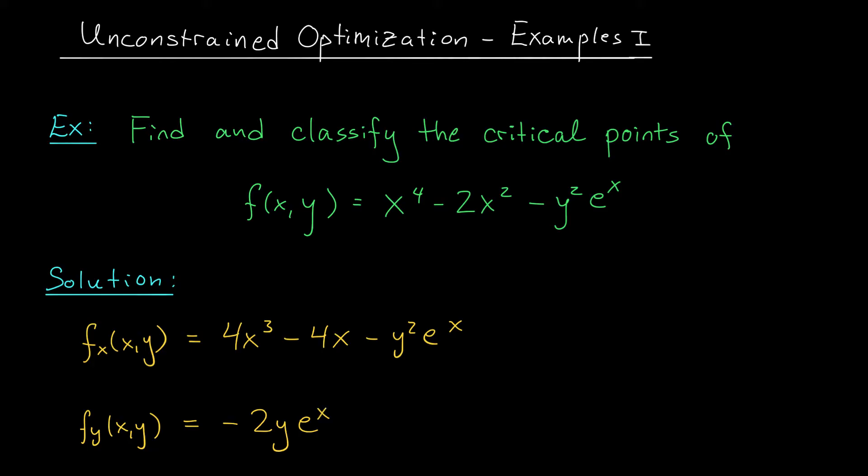We have to ask ourselves, where are these partial derivatives zero or where do they not exist? Well, take a look at the functions we're working with here, folks. These functions will exist everywhere. We're not dividing by zero. We're not taking the square root of a negative. We're not plugging something negative into a log function. They exist everywhere. So we want to figure out where both fx and fy are equal to zero.